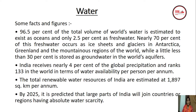India receives nearly four percent of the global precipitation and ranks 133 in the world in terms of water availability per person per annum. The total renewable water resources of India are estimated at 1897 cubic kilometers per annum. By 2025, it is predicted that large parts of India will join countries or regions having absolute water scarcity.